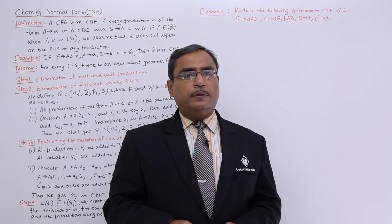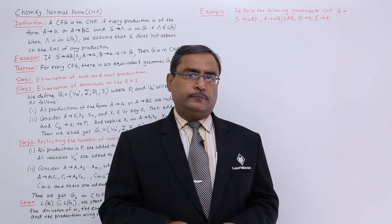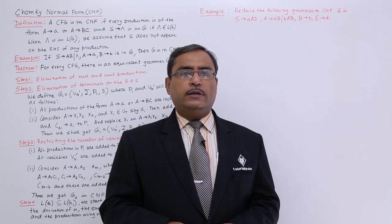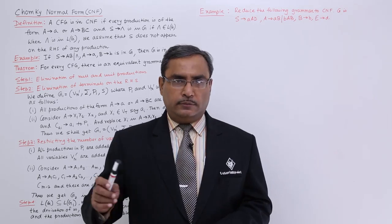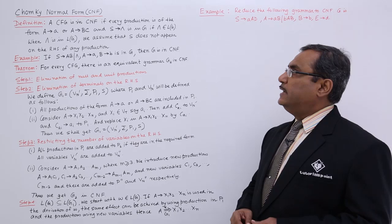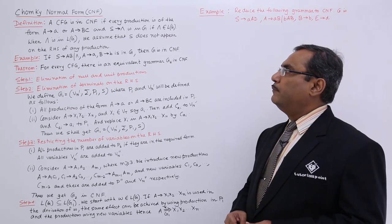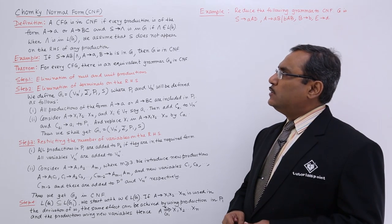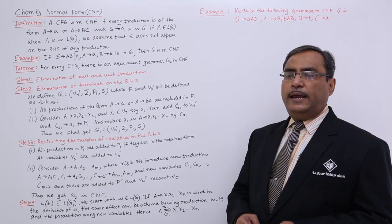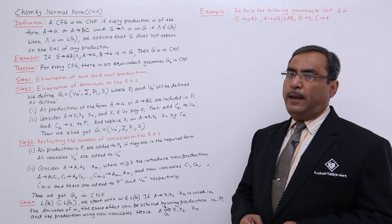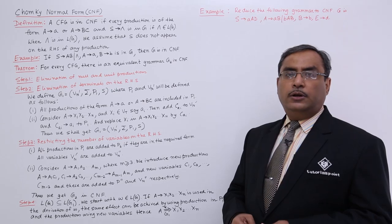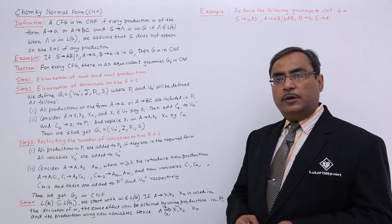In this session, we are going to discuss Chomsky Normal Form, and this Chomsky Normal Form will be applied on a context free grammar. Definition: a context free grammar is in CNF, that is Chomsky Normal Form, if every production is of the form capital A produces small a, or capital A produces capital B capital C. That means, non-terminal produces terminal, or non-terminal produces non-terminal non-terminal.